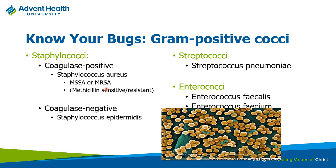I want to get you familiar with bacteria you're going to run into very commonly. A lot of gram positive bugs tend to live on the skin, which is why when you see skin infections, the likely organisms are usually gram positives. You're going to have things like staph epi and staph aureus. Staph aureus can cause pretty serious infections and can be delineated into MSSA — methicillin-susceptible staph aureus — or MRSA, methicillin-resistant staph aureus.